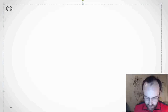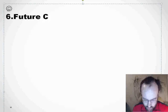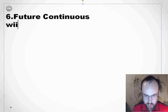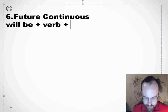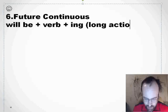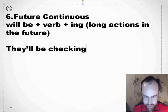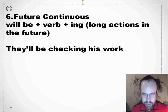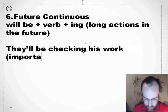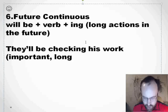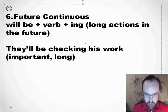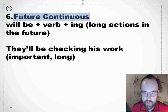What about future continuous? We form it with will be plus verb plus -ing. We use it for long actions in the future. For example: they'll be checking his work. You can say 'they'll check his work' — that's a short action. But 'they'll be checking his work' means it's important and a long action. Future continuous: will be plus verb plus -ing.